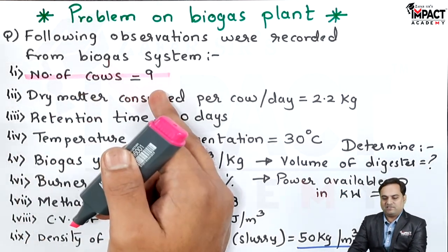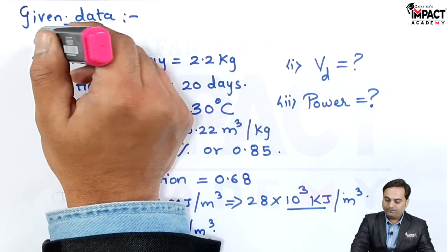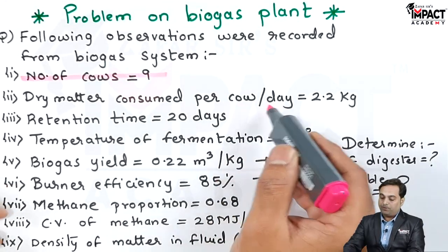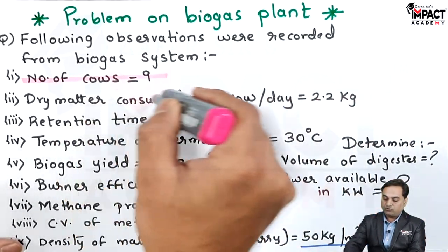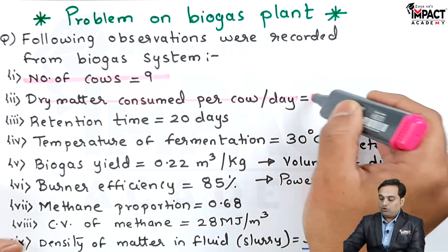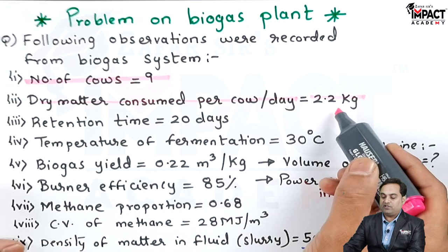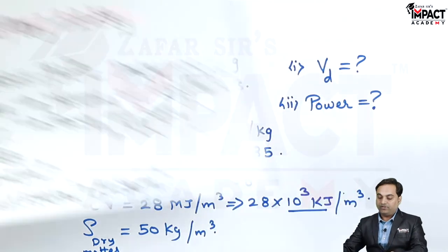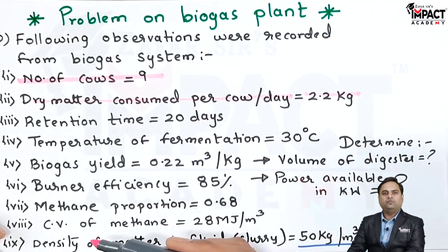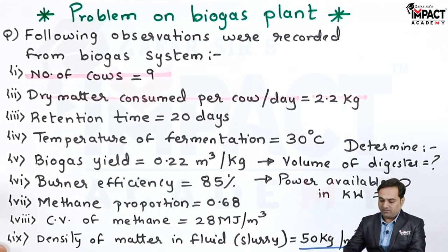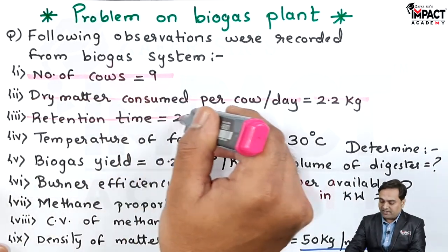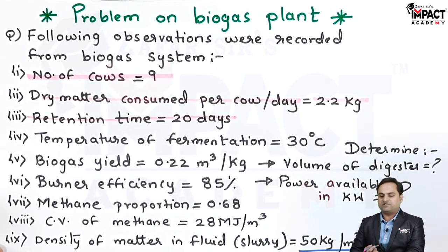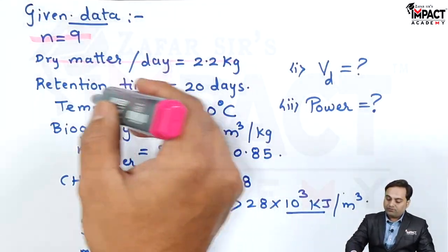The number of cows are given as 9. Next, dry matter consumed per cow per day is 2.2 kg — it means per day one cow is producing a waste of 2.2 kg written as dry matter per day. Then the retention time, meaning whatever slurry we are feeding in the biogas plant, we have to keep it for 20 days so that fermentation takes place and biogas gets produced.